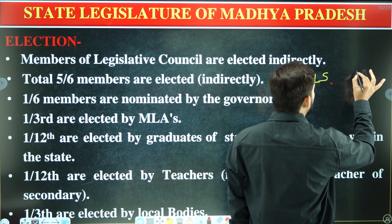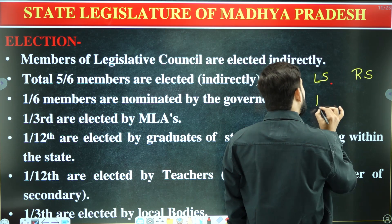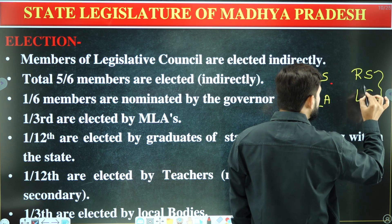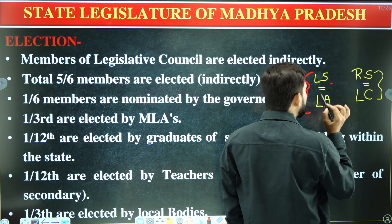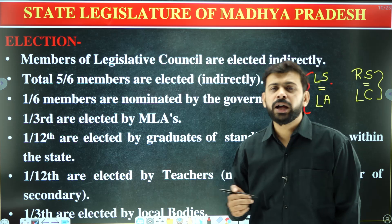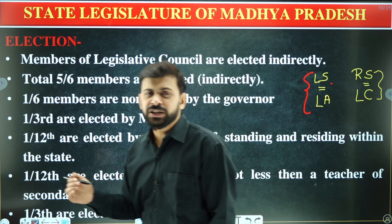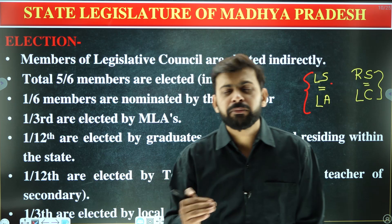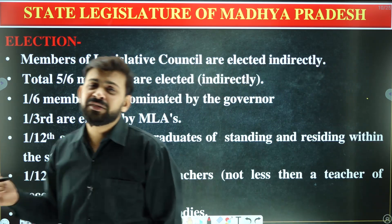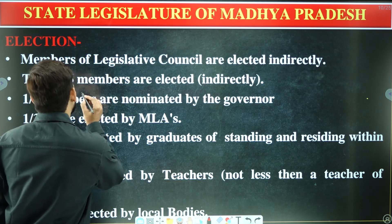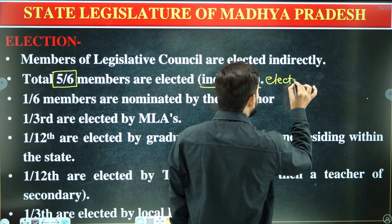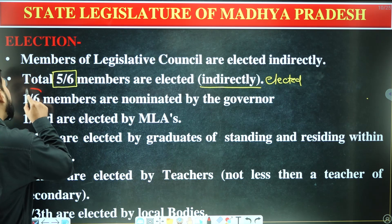There is a comparison here — the legislative council and legislative assembly have some similar functions. In the legislative assembly, election is direct, just like the Lok Sabha where election is also direct. In the Rajya Sabha, the manner of election is indirect, and likewise the same indirect method applies to the legislative council. In total, five-sixths of the members are indirectly elected.